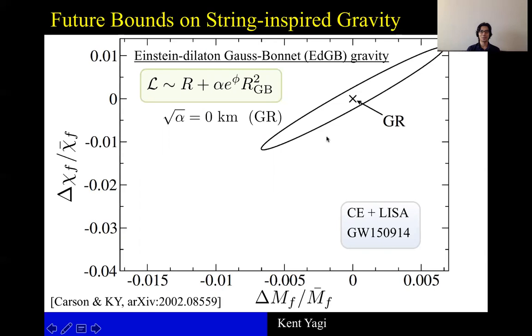So we are always going to use GR as a template. And if GR is indeed the correct theory of nature, then this error ellipse is what you find in this final mass, final spin difference plane, assuming that future multi-band observation between Cosmic Explorer and LISA detects signal from GW150914-like event.